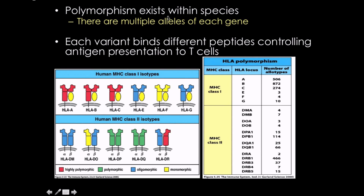Polymorphism is where there are multiple alleles of a given gene, and each variation binds to different peptides, controlling antigen presentation to cells. HLA is the same thing as MHC but specific to humans. There are highly polymorphic alleles shown in red, polymorphic in green, oligomorphic, and monomorphic. For HLA-A there are 506 allotypes — highly polymorphic. HLA-B has 872 — also highly polymorphic — and then the numbers drop off considerably for others.